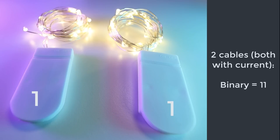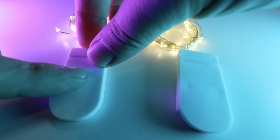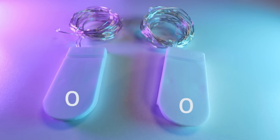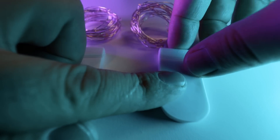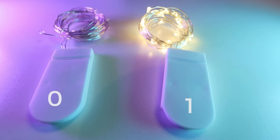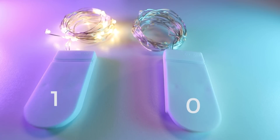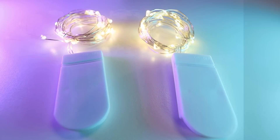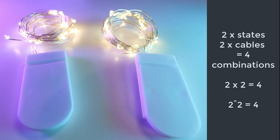If I put current on the left and no current on the right, binary value is now one-zero. Turn them both on and we've got current on two cables, so binary value is one-one. So we either have no current on both — binary value zero-zero — or zero-one, or one-zero, and lastly one-one. We have two states, either on or off, and two cables. Two to the power of two is four.